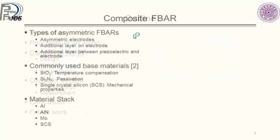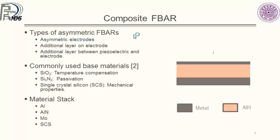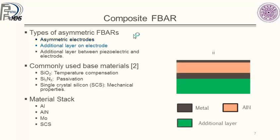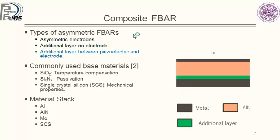Moving on to the composite F-bar, we consider three types of asymmetric F-bars. First, asymmetric electrodes where the top and bottom electrodes are of different geometric proportions or different materials. Second, an additional layer on the electrode. Third, an additional layer between the piezoelectric and the electrode — this layer must be a dielectric and can be thought of as capacitive driving for the piezoelectric layer.